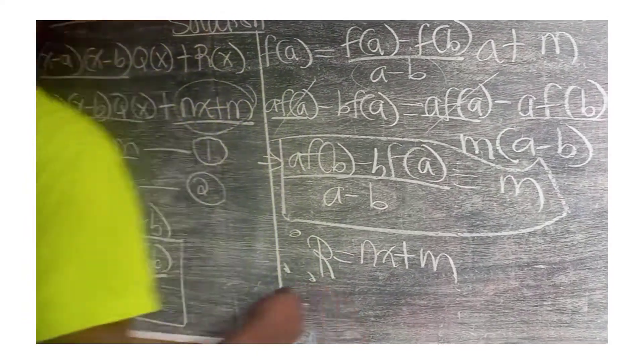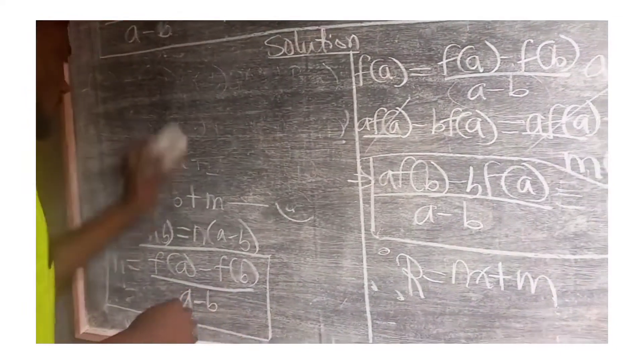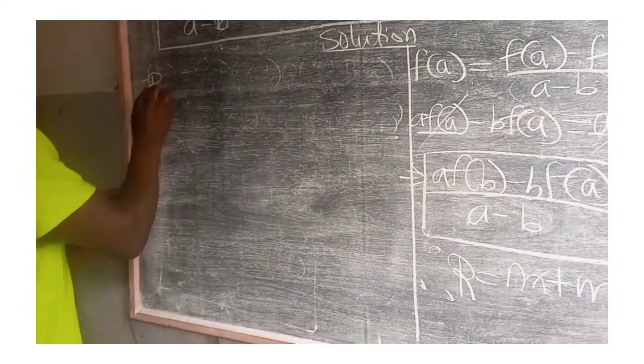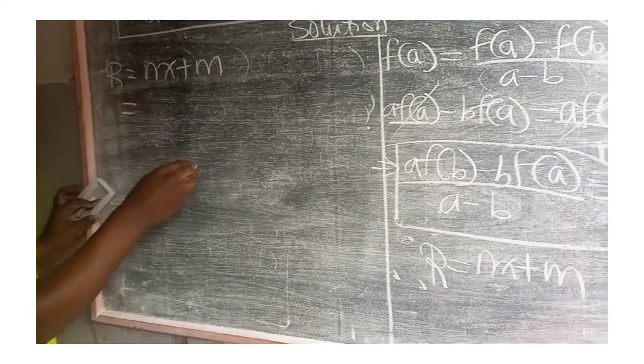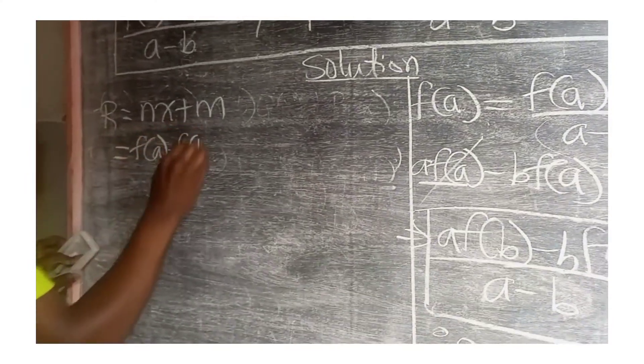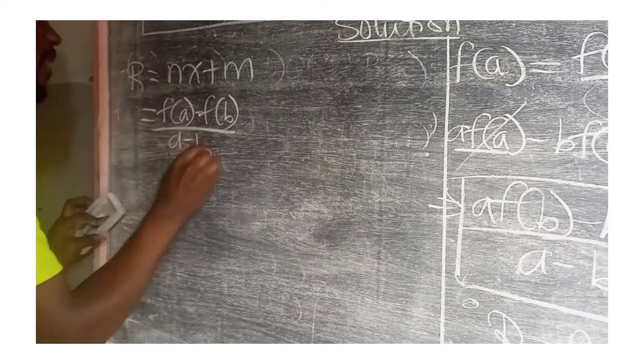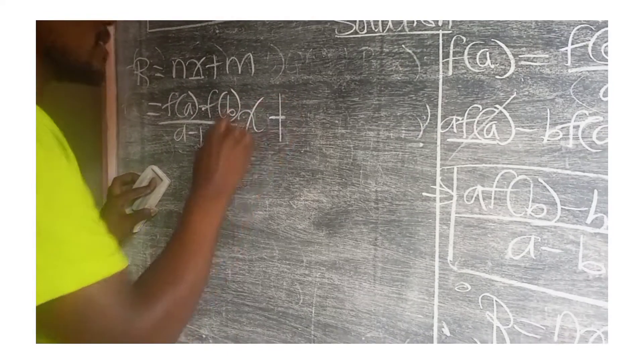During the substitution, we are going to have it as, let me use this space. The remainder is equal to nx+m, which is equal to, our n is [f(a) - f(b)]/(a-b) times x, then plus the m.